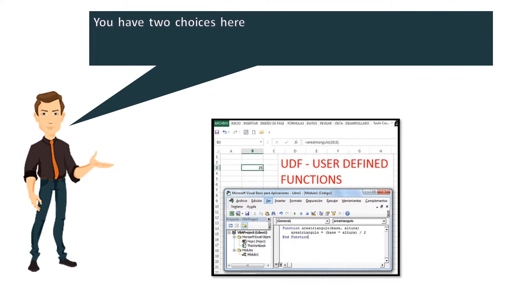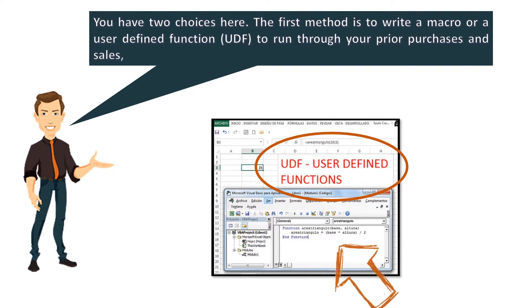Essentially you have two choices here. The first method is to write a macro or a user defined function, UDF, to run through your prior purchases and sales, and figure out the cost of sale of the items in question.